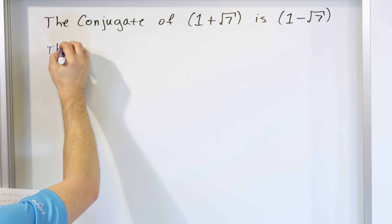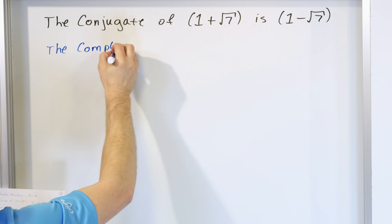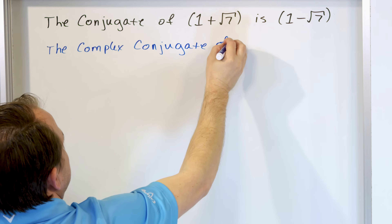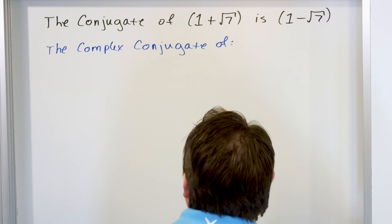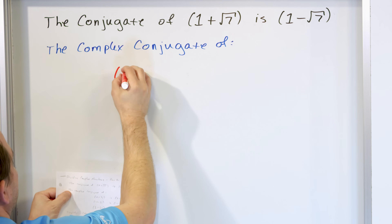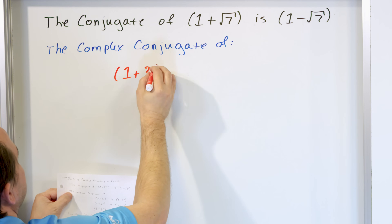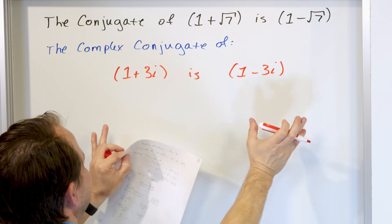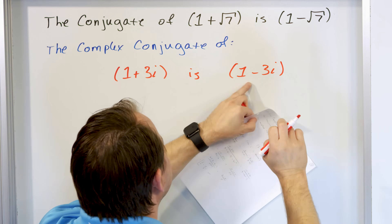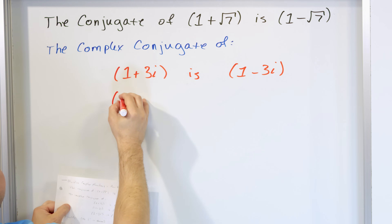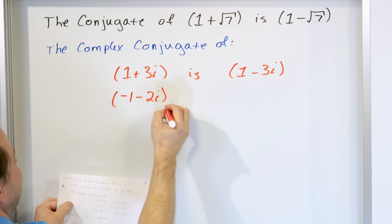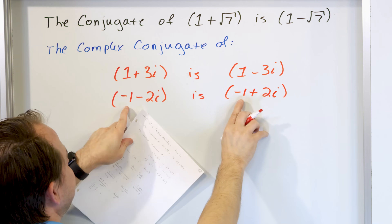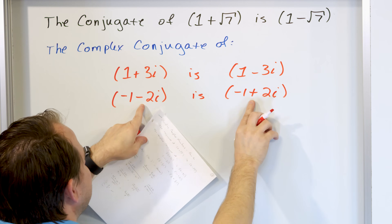So now, the complex conjugate. Let's take a few examples. The complex conjugate of the complex number one plus three i is simply one minus three i. All you do is take a copy of the exact same number but switch the sign — plus becomes minus. Next example: negative one minus two i. Its complex conjugate is negative one plus two i — it's exactly the same thing, just switch the sign of the imaginary part.